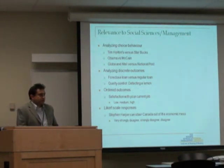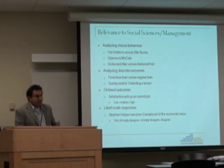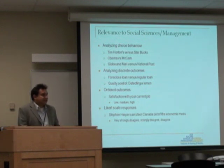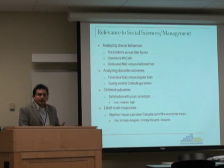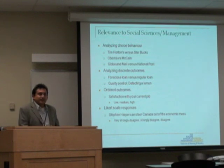Anytime you are dealing with choice — for example, why would someone prefer Ryerson University over University of Toronto or York University, or why would one prefer Tim Hortons coffee over Starbucks, or Obama versus McCain — you can model that choice. Any time there is a choice, the data is either 0 or 1. For instance, would you like to do a graduate study, go for a master's or PhD or not? Two options, 0 or 1. That is categorical data.